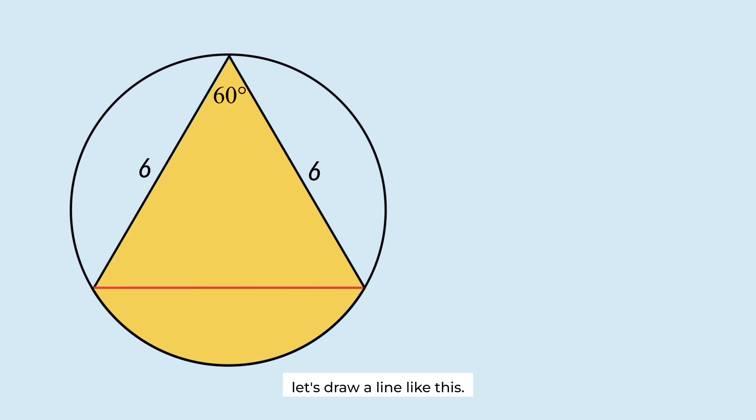Let's draw a line like this. This figure is divided into a triangle and a segment. We need to find the area of these two shapes separately.